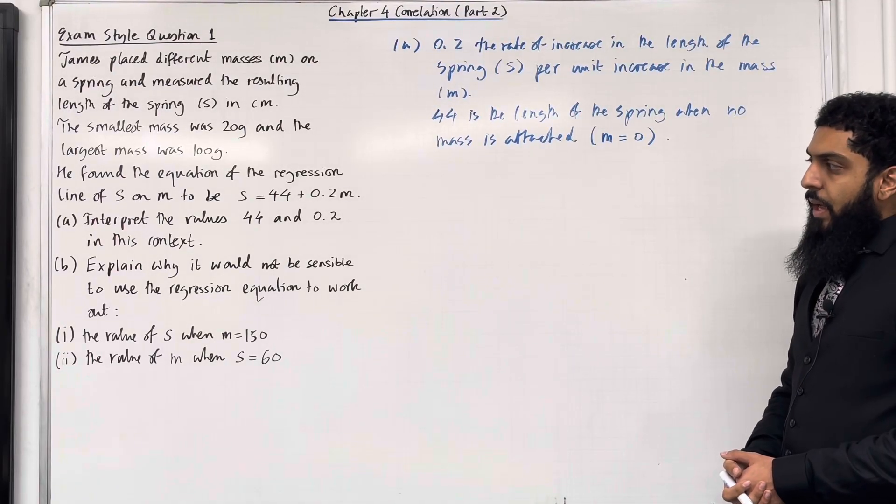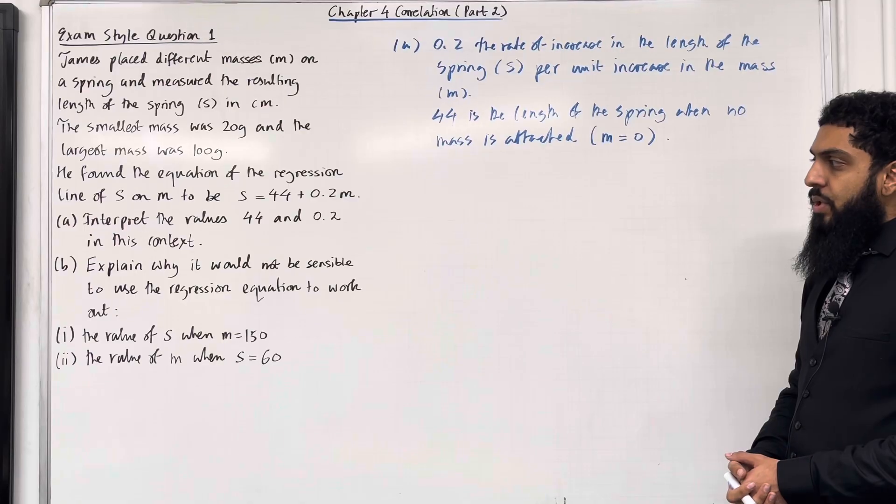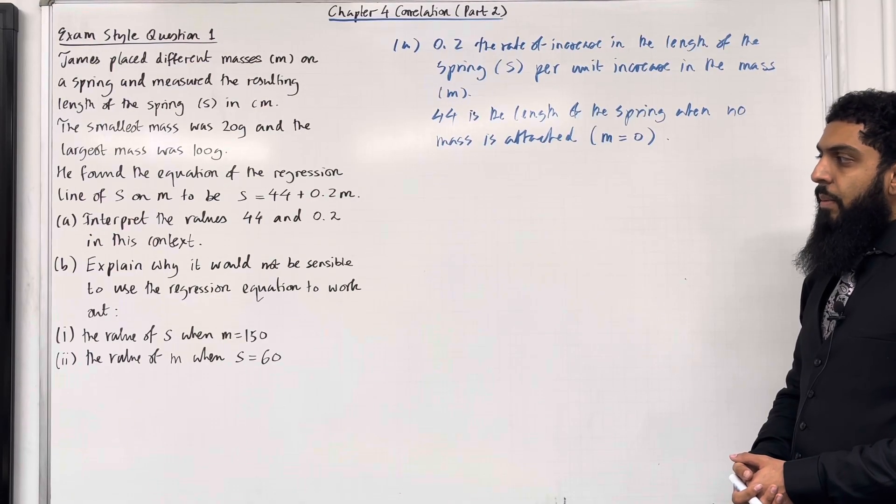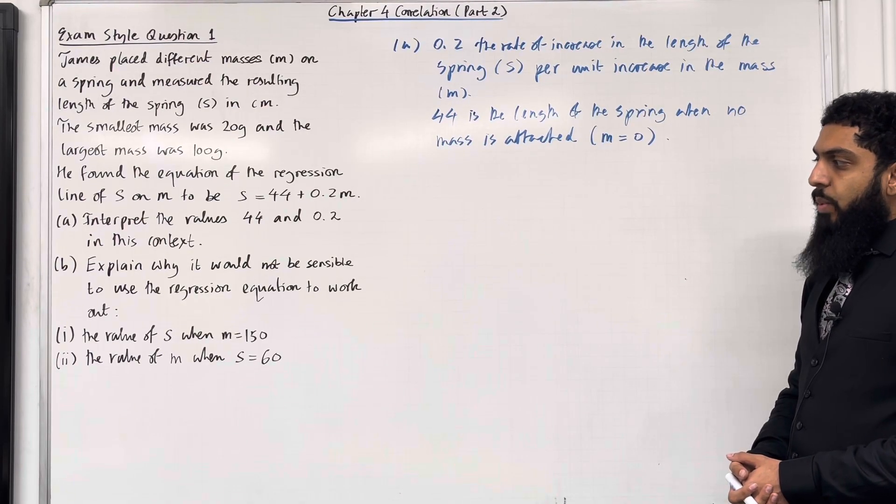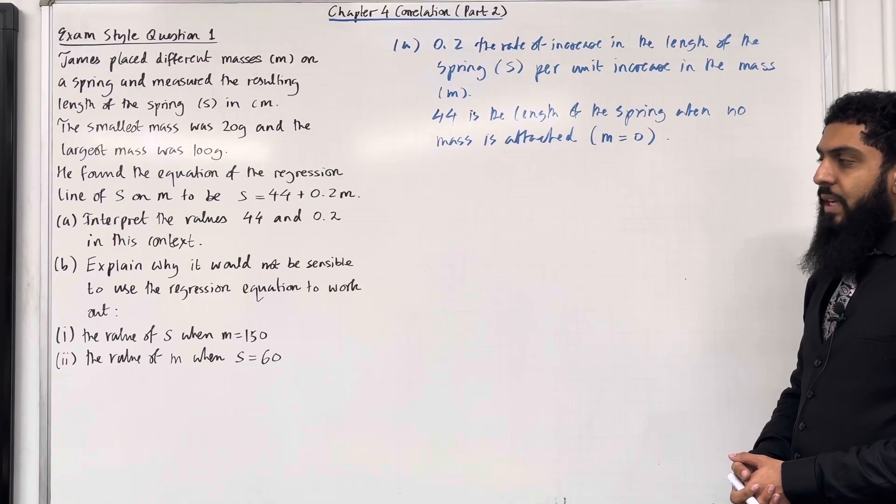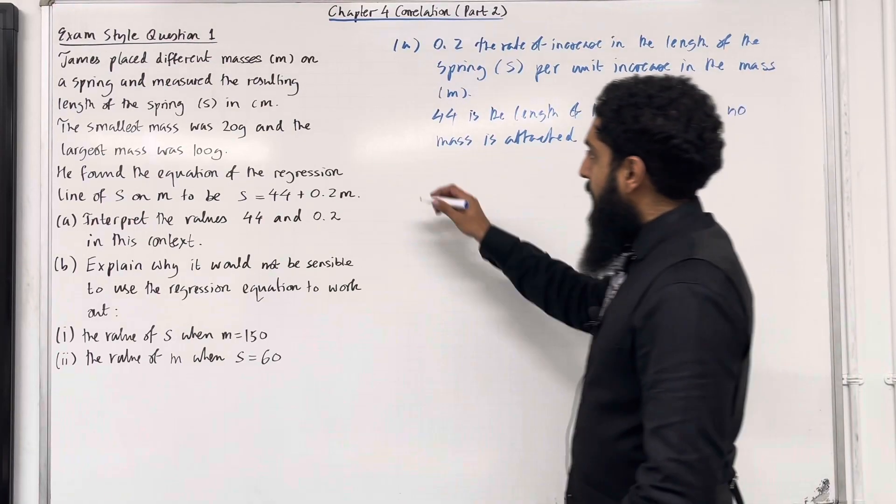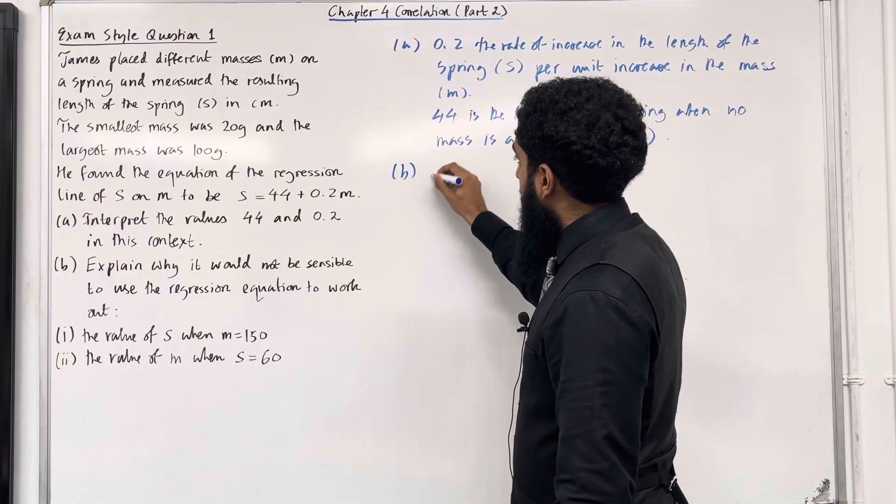Part B. Explain why it would not be sensible to use the regression equation to work out, part 1, the value of s when m = 150. So let's have a look at part B, part 1.